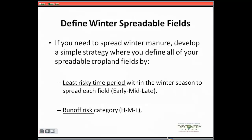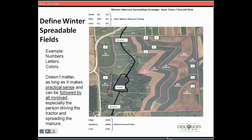You want to find and identify the least risky fields and the least risky time period. If you do need to spread winter manure, have a plan for how it goes. Here's an example — a map of a farm. This is a contour-stripped, hillier farm in Wisconsin. We've got a stream coming through and a little bit of a dam and a pond. The fields that are closest to the stream are actually the steeper fields — they're the most risky for runoff.